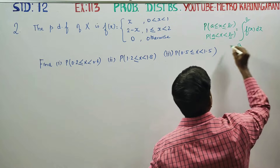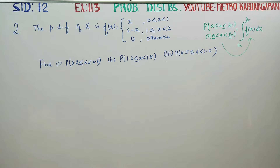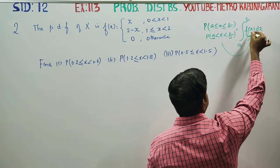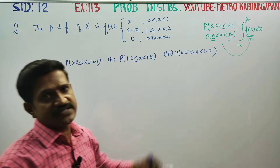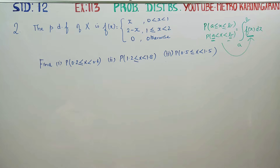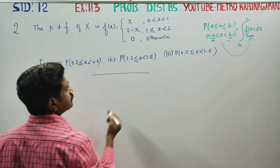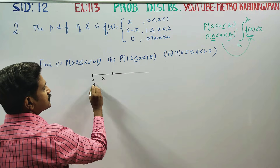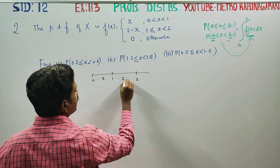You integrate and it becomes your answer. The probability density function — you integrate it and it becomes your answer. That is the formula.